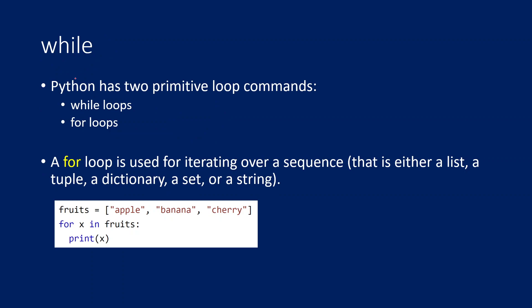As mentioned in the previous video, Python has two iterative loop components: while loop and for loop. The for loop is used to iterate over a sequence. In Python we have several data types that are sequences — list, tuple, dictionary, set, and string, which is a collection of characters. We are going to discuss the for loop in detail in this video.